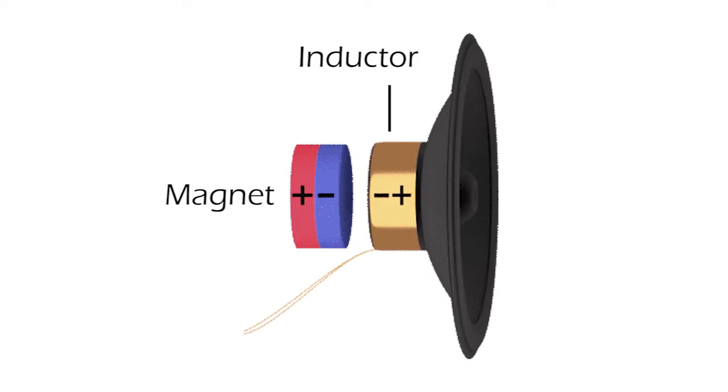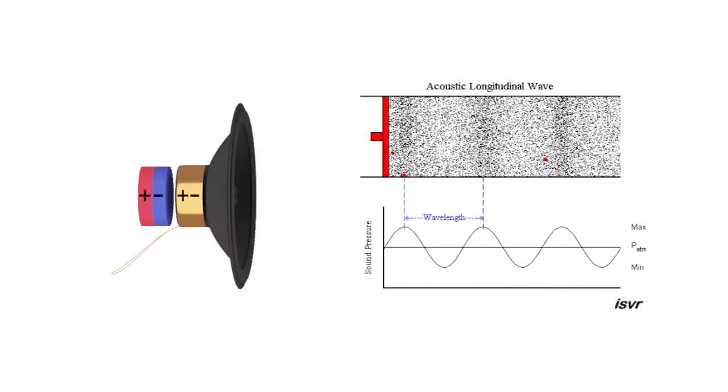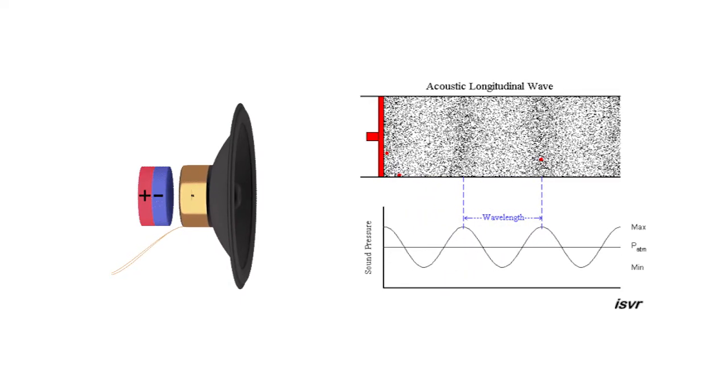The inductor will transmit this movement to the cone, and in turn the cone will push and pull the air particles in front of it, finally producing the sound wave.